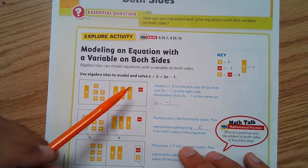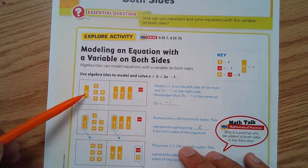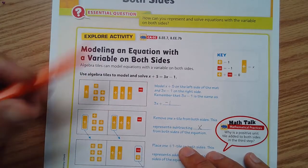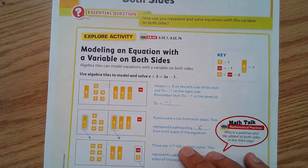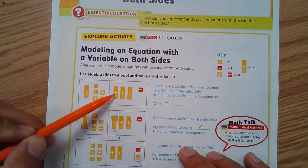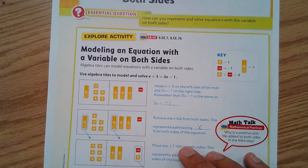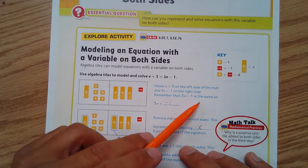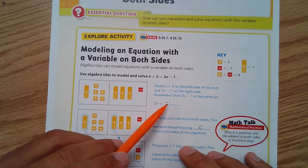Using algebra tiles, we have x plus 5—this is x plus 1, 2, 3, 4, 5—and this equals sign, and on the other side 3x minus 1. So 3x and a negative 1. Remember, 3x minus 1 is the same thing as 3x plus a negative 1.